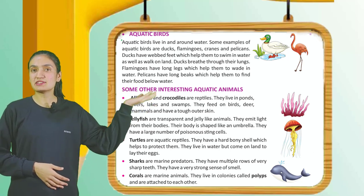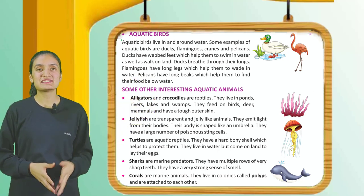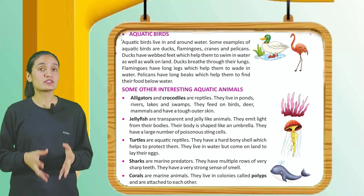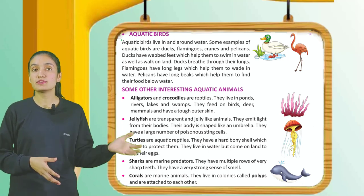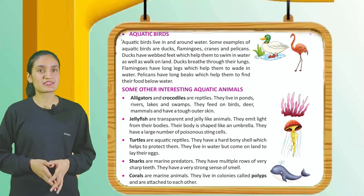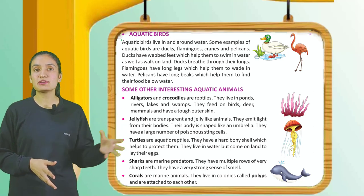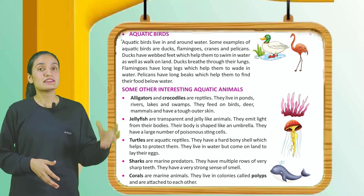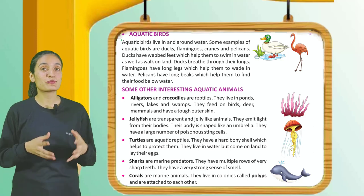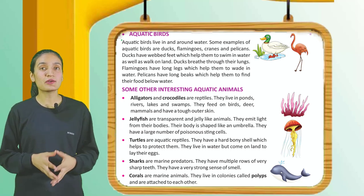Some other interesting aquatic animals: Alligators and crocodiles are reptiles that live in ponds, rivers, lakes, and swamps. They feed on birds, deer, and mammals, and have a tough outer skin. Jellyfish are transparent, jelly-like animals that emit light from their bodies. Their body is shaped like an umbrella and they have a large number of poisonous sting cells.